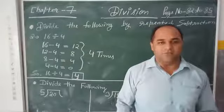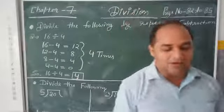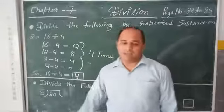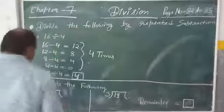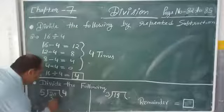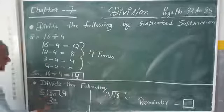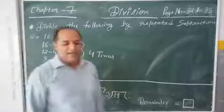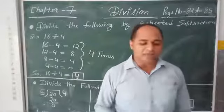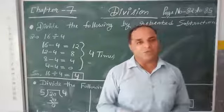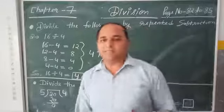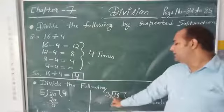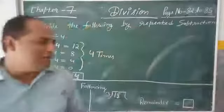Now children, we move on to page number 84. The question is: divide the following. The question is given at page number 84. Now we will subtract 20 from 20, then we get 0. We also have to divide 19 by 3. We know that 3 goes into 19.